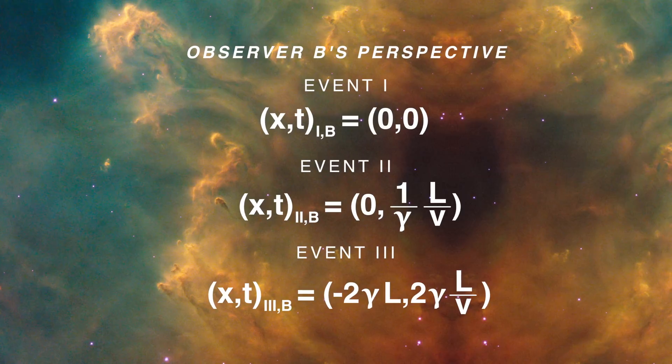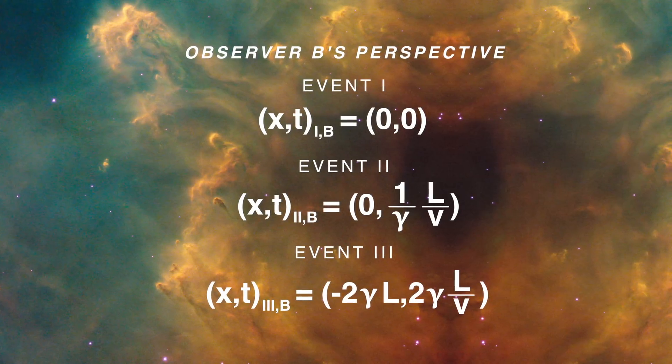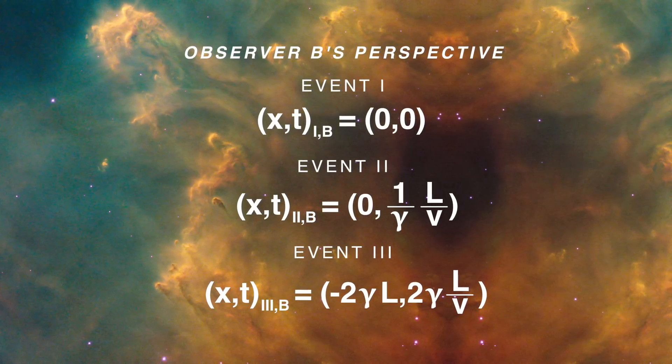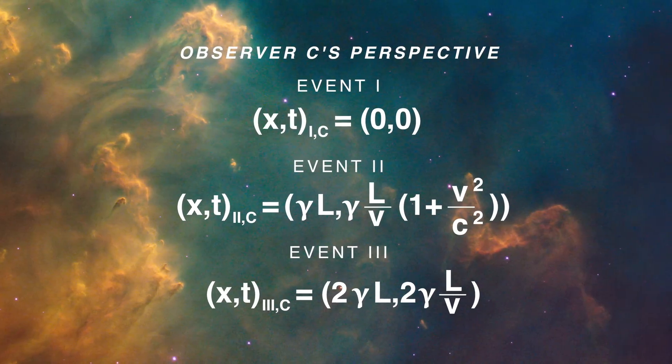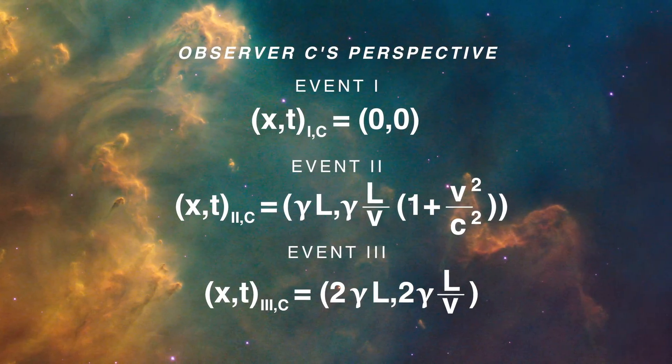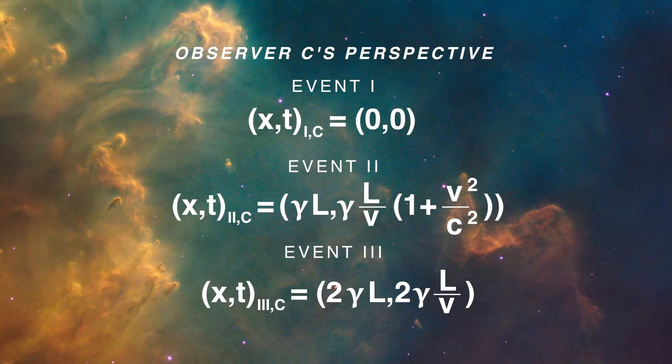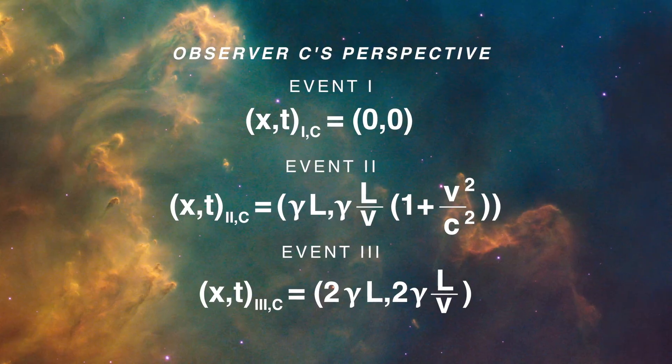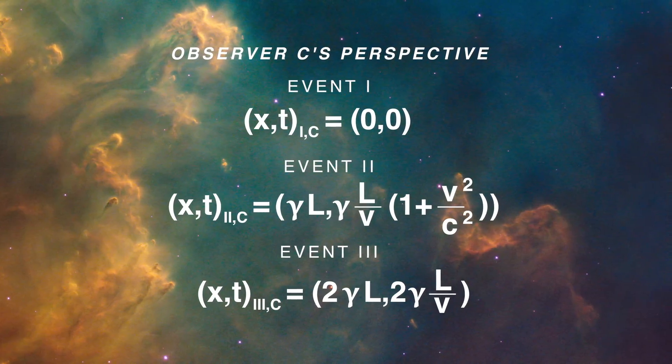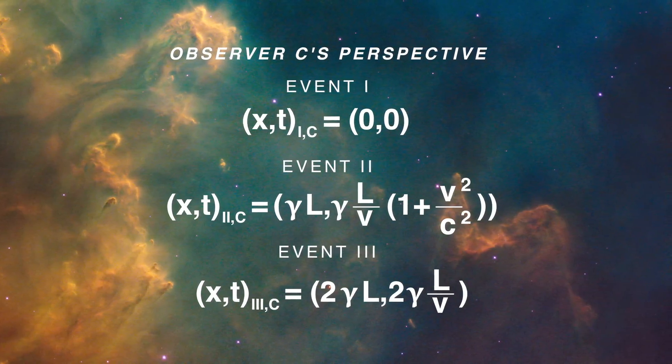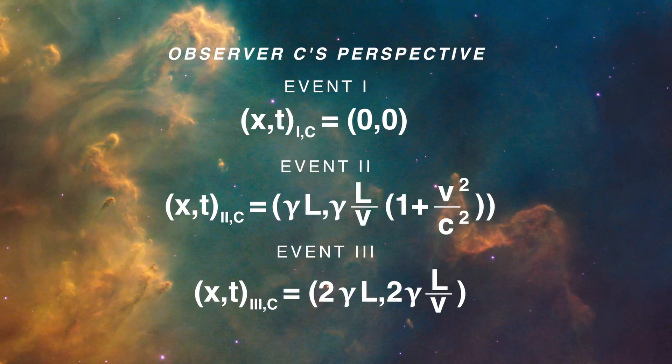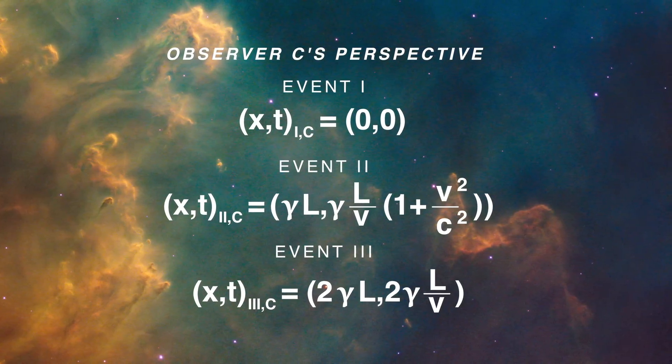She sees those locations like we see here. And observer C sees things in yet a different way, which we can see here. Now these aren't obvious. If you want to do the calculations yourself, just put in the x comma t from observer A into the Lorentz equations with the appropriate velocity and it's actually pretty easy.